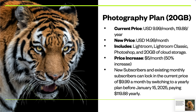If you are a current subscriber or you're thinking of subscribing to the 20 gigabyte photography plan, this plan includes Lightroom, Lightroom Classic, Photoshop, and 20 gigabytes of cloud storage. The current price is $9.99 a month or $119.88 a year. The new price is $14.99 a month — that's a $5 a month increase, a 50% increase. But new subscribers or existing monthly subscribers could lock in the current price of $9.99 a month by switching to a yearly plan before January 15th, 2025, which will run $119.88 a year.